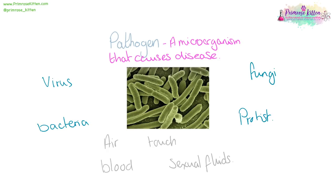They can also be spread through blood and sexual fluids, or transferred via a vector like a mosquito. Bacteria are going to make you feel ill because they produce a lot of toxins — so they'll give you things like food poisoning. Viruses will make you feel ill because when they reproduce, they cause massive cell death.